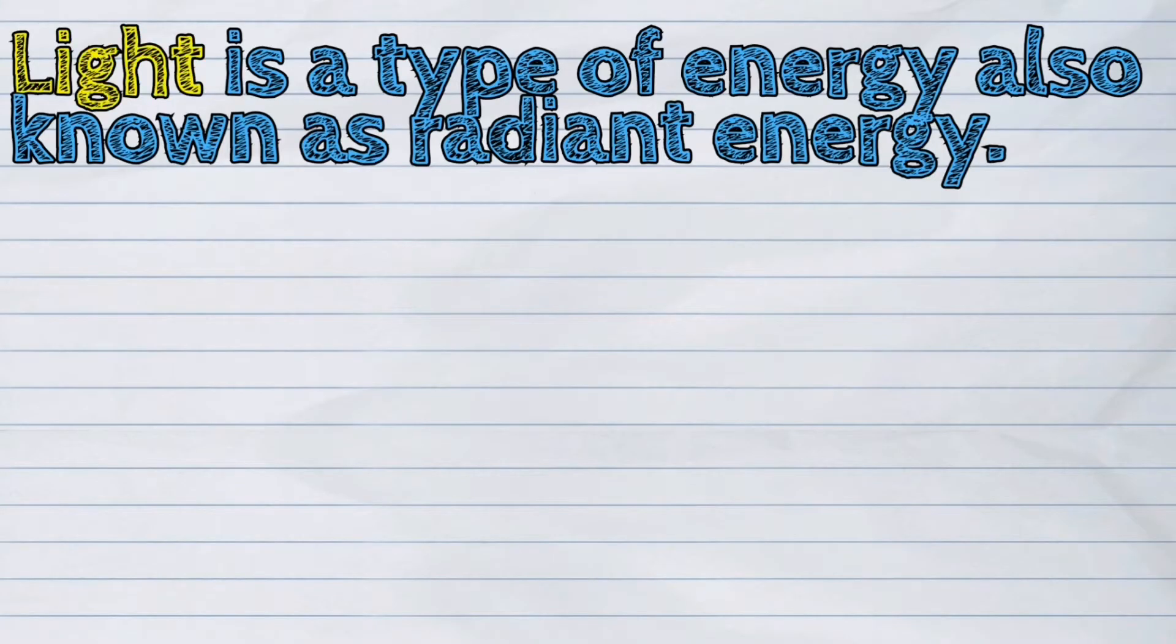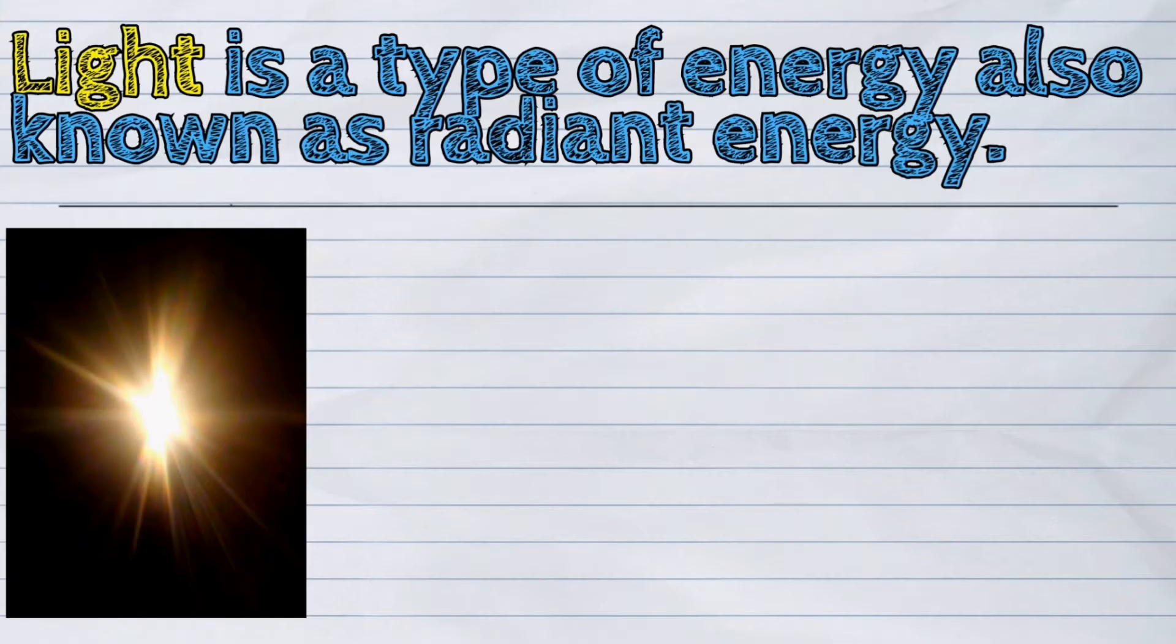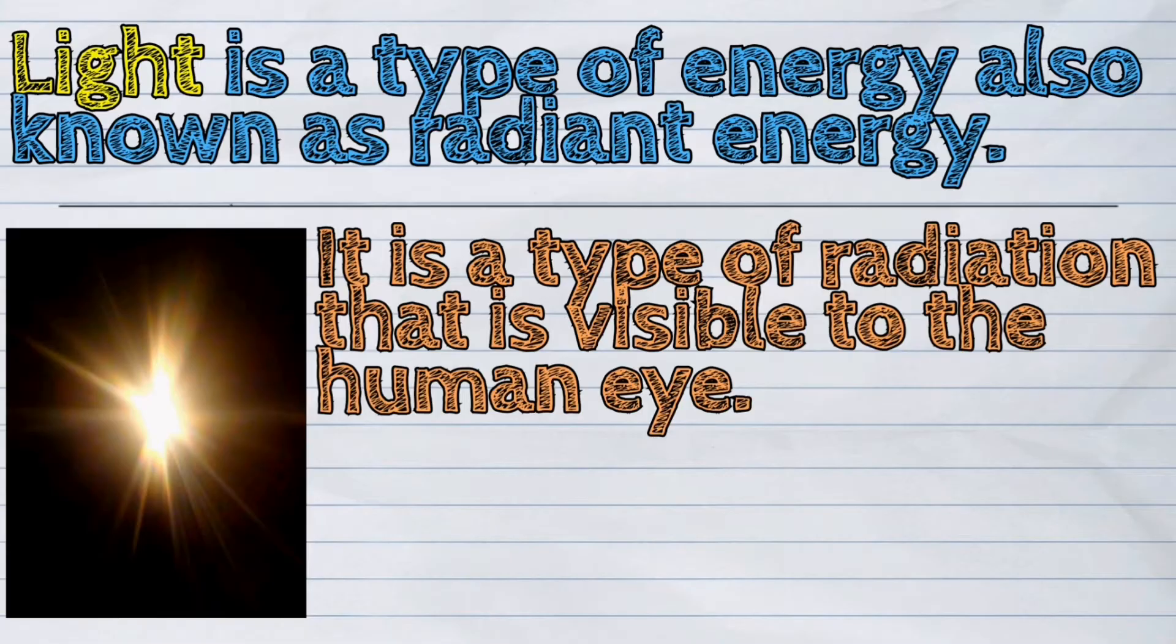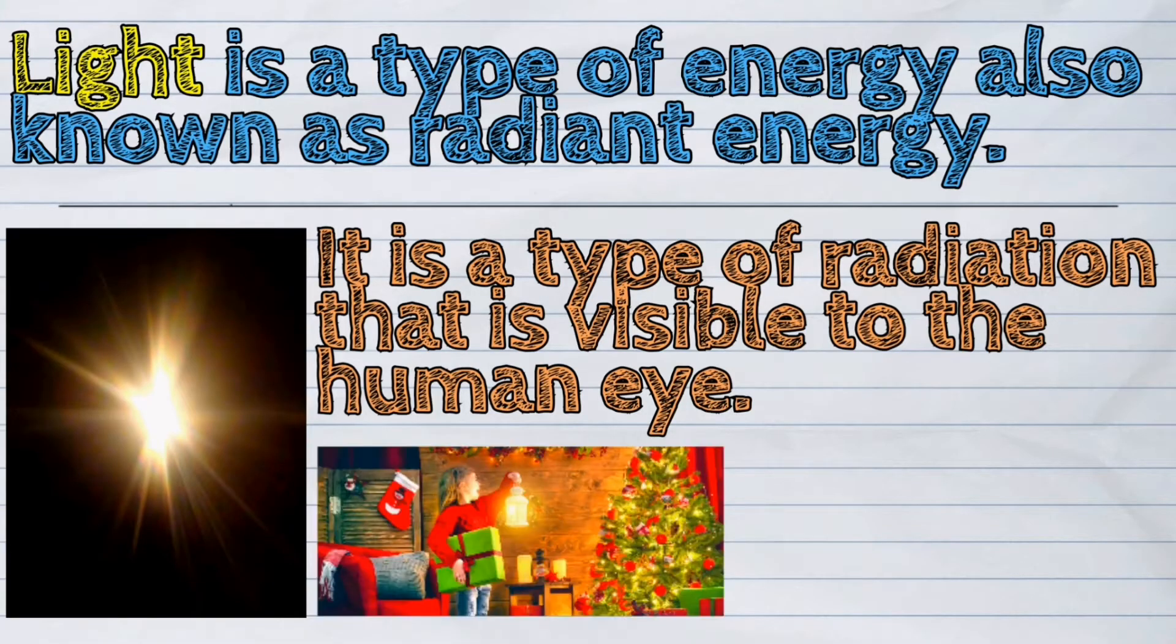Light is a type of energy also known as radiant energy. It is a type of radiation that is visible to the human eye.